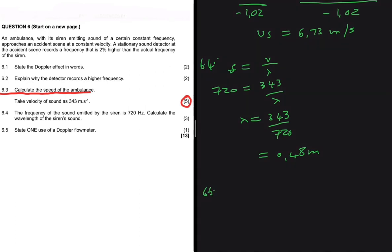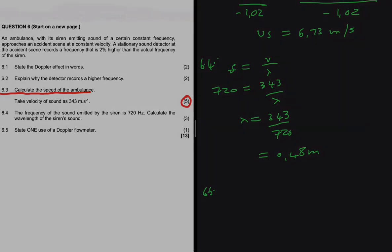And the last one, 6.5 — a use of the Doppler flow meter. It is used to measure the heartbeat of a fetus in the womb. It is also used to measure the direction and speed of blood flow in arteries.